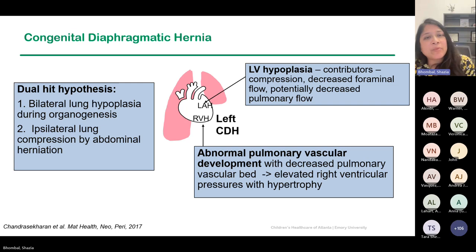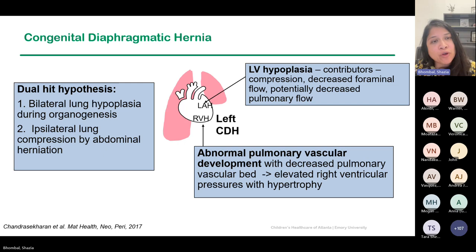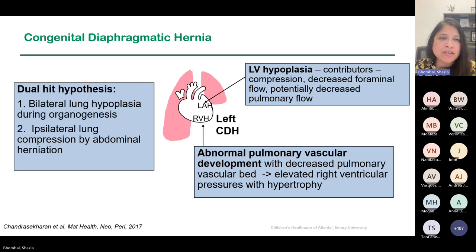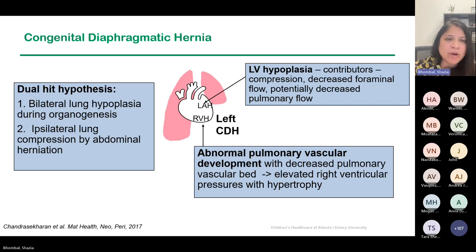LV hypoplasia contributes via compression, and also decreased foraminal flow — flow follows form. As the heart shifts in fetal life, less flow goes across the PFO into the left side, which may impact growth. As gestation goes on, there is potentially decreased pulmonary flow from patients with CDH, which may also affect LV formation. In addition, there's abnormal pulmonary vascular development, a decreased pulmonary vascular bed, and elevated ventricular pressures with hypertrophy that we see in many of these patients.